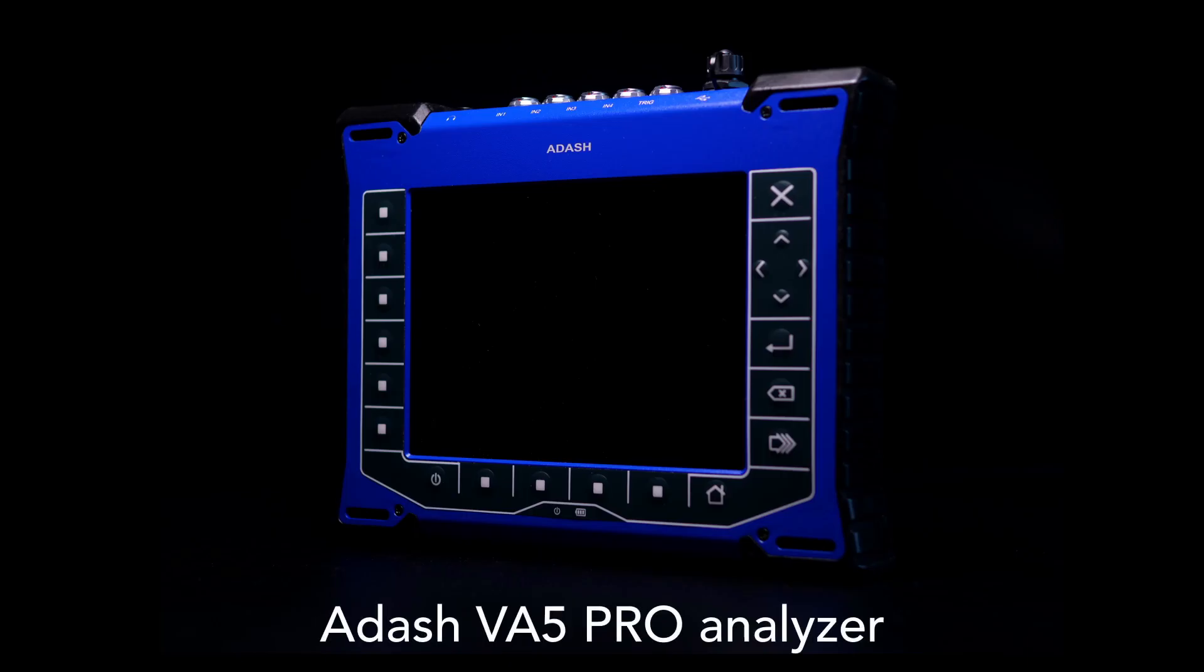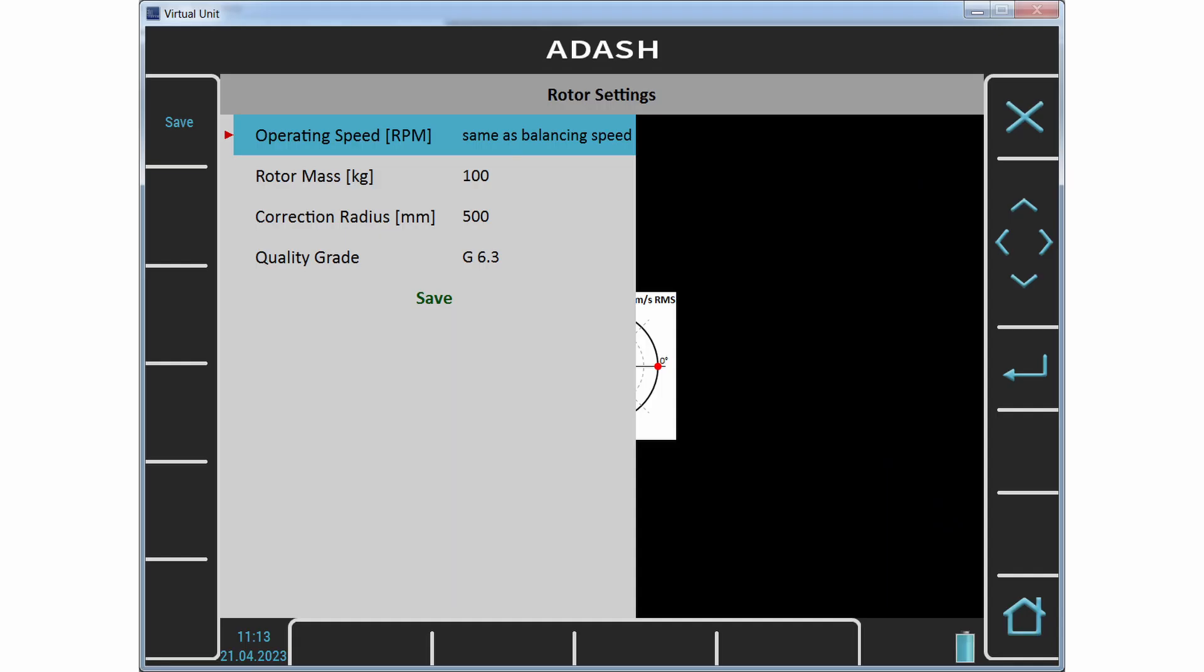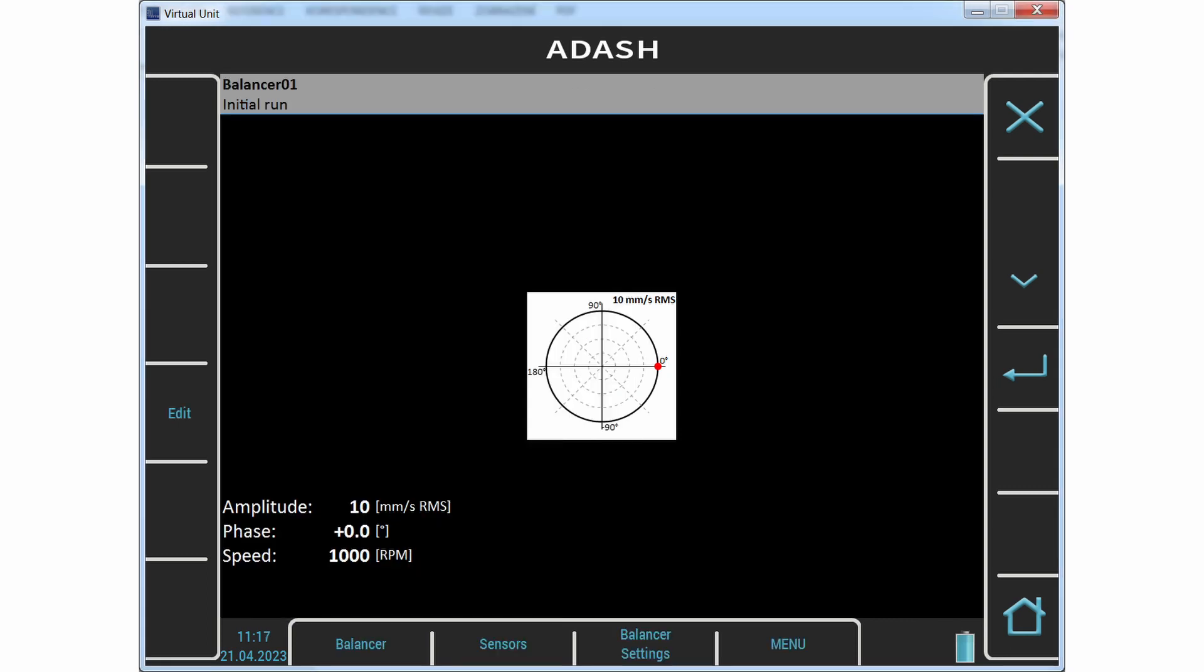Now I show you the balancing process with Adash VA5 analyzer. Firstly, I enter the rotor parameters. Mass is 100 kilograms. Radius is 500 millimeters. And quality grade is G 6.3. The initial values are 10 millimeters per second the amplitude and 0 degrees the phase.